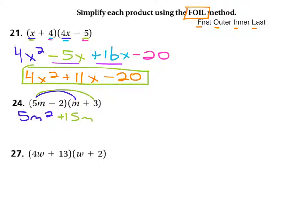Then you have the inner terms. This times this. Negative 2m. And then finally you have the last terms. Like that. Negative 2 times 3. Negative 6.